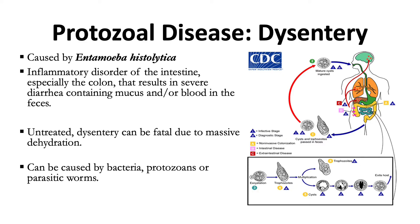Looking at the life cycle of Entamoeba histolytica: in stage one, cysts and trophozoites are passed in the feces — cysts are typically found in formed stool, whereas trophozoites are found in diarrheal stool. Infection occurs by ingestion of mature cysts. The only infectious stage is the mature cyst, because trophozoites do not survive long outside the body and cannot withstand gastric acidity.